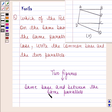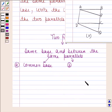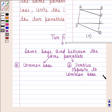Point A: they have a common base. And point B: the vertices opposite to the common base of each figure lie on a line parallel to the base.